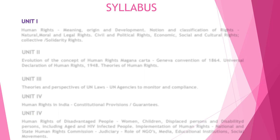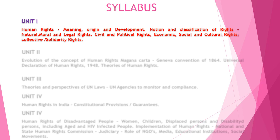As per the prescribed syllabus, human rights is divided into five units. The first unit covers the introduction of human rights - that is the meaning, origin and development of human rights. Next, the classification of human rights: natural, moral, legal rights, civil rights, political rights, economic rights, social and cultural rights, and collective and solidarity rights. These are the major rights we are going to discuss in the first unit.